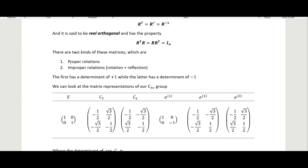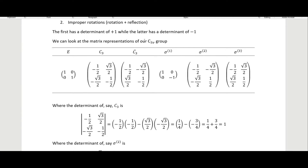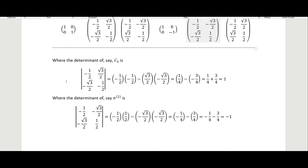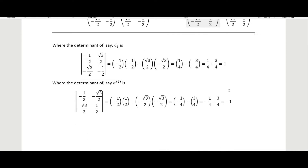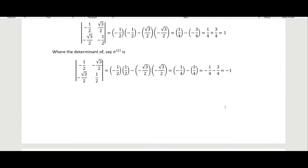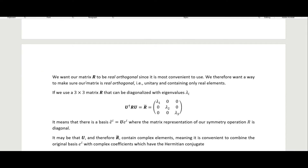There are two kinds of matrices: proper rotations have a determinant of plus one, while improper rotations have a determinant of minus one. Looking at the matrix representations of the c3v group, the three on the left have a determinant of plus one, and the three on the right — which include reflections — have a determinant of minus one. For example, the determinant of c3 equals plus one, and the determinant of sigma two equals minus one.